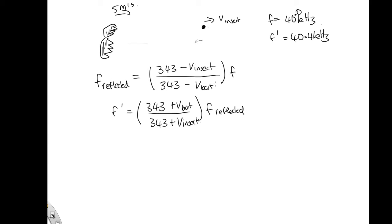So now what we can do is we can substitute in this expression into here, and we end up with 343 plus v-bat, which is the 5,